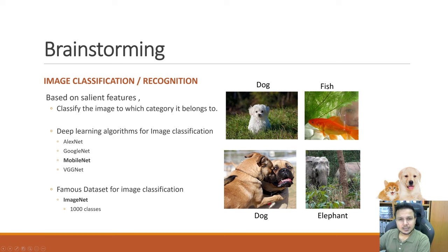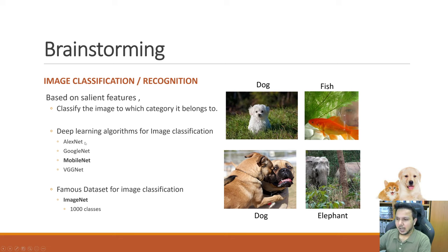If we provide these images to a deep learning architecture, it will classify them accordingly. But how? Let's get back to some history. In 2012, AlexNet beat the image classification challenge — AlexNet beat human capacity. Since then, deep learning architectures became really famous, and we are surprised day by day by how well they are performing.